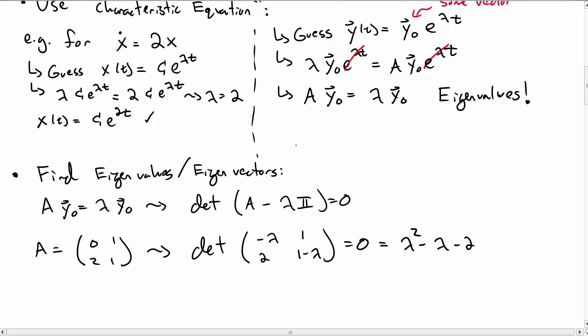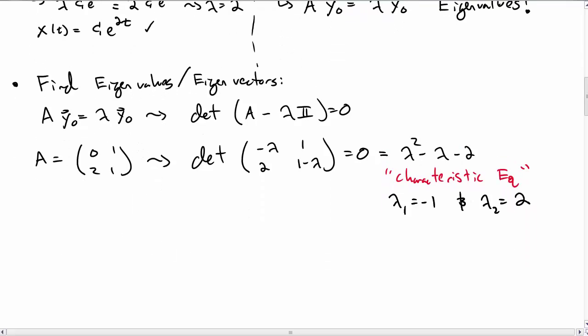Multiplying that out we get lambda squared minus lambda minus 2. And we call this typically also the characteristic equation, which is kind of confusing. This is the eigenvalue characteristic equation. Solutions are lambda 1 equals minus 1 and lambda 2 equals 2.